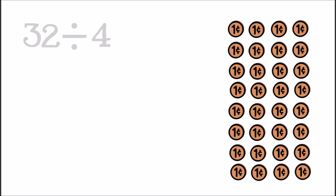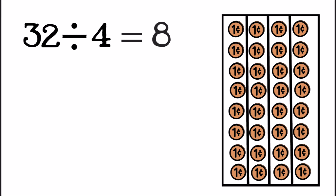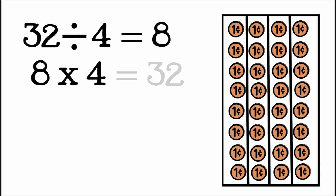Next, let's take thirty-two divided by four. If we divide thirty-two into four equal parts, how many are in each group? Eight. Thirty-two divided by four equals eight. We can double-check this by taking eight times four. Eight times four equals thirty-two, so we know that eight is the right answer to thirty-two divided by four.